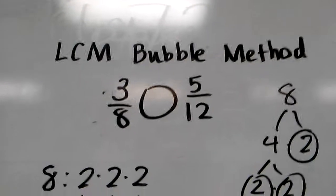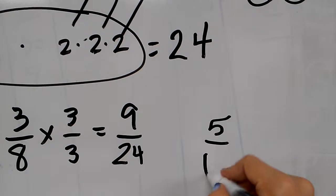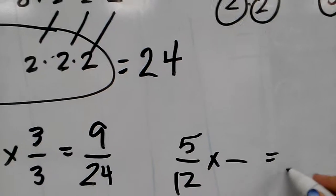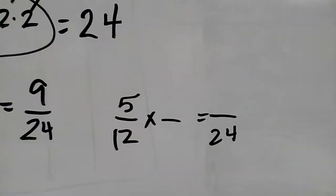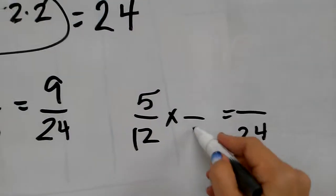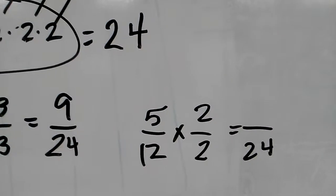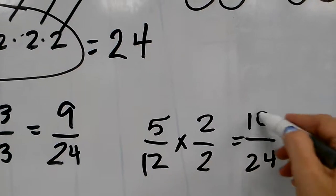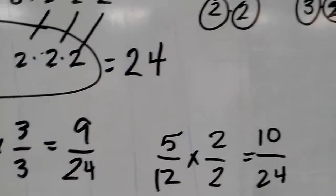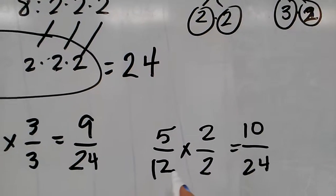I do the same thing for 5/12. 5/12 times something that's going to give me a denominator of 24. 12 times 2 is 24, so I multiply by 2/2 because that is my equivalent form of 1. 5 times 2 is 10, so 10/24 is equivalent to 5/12.